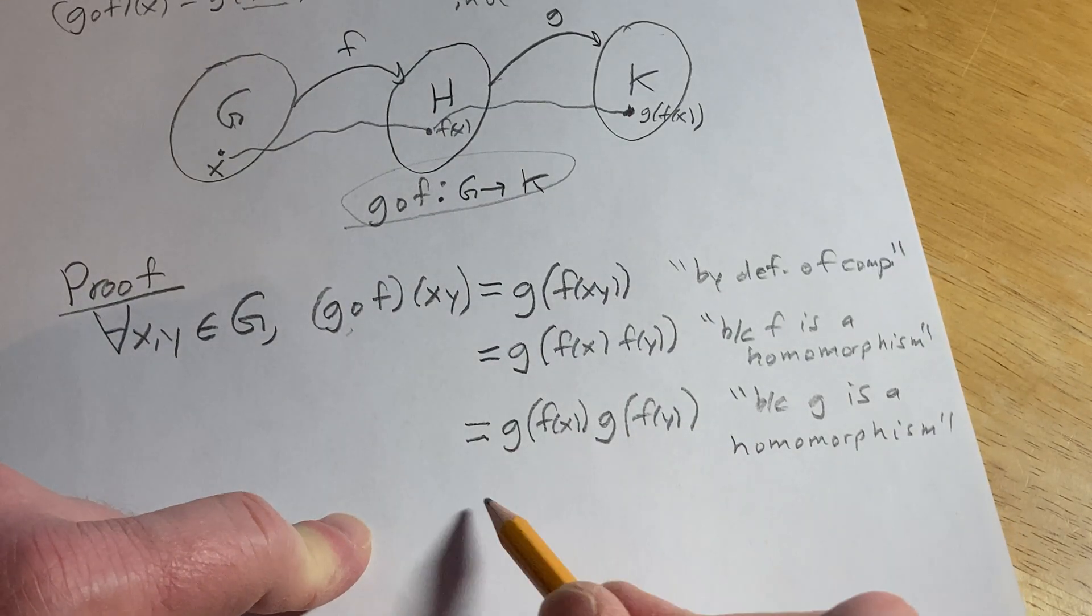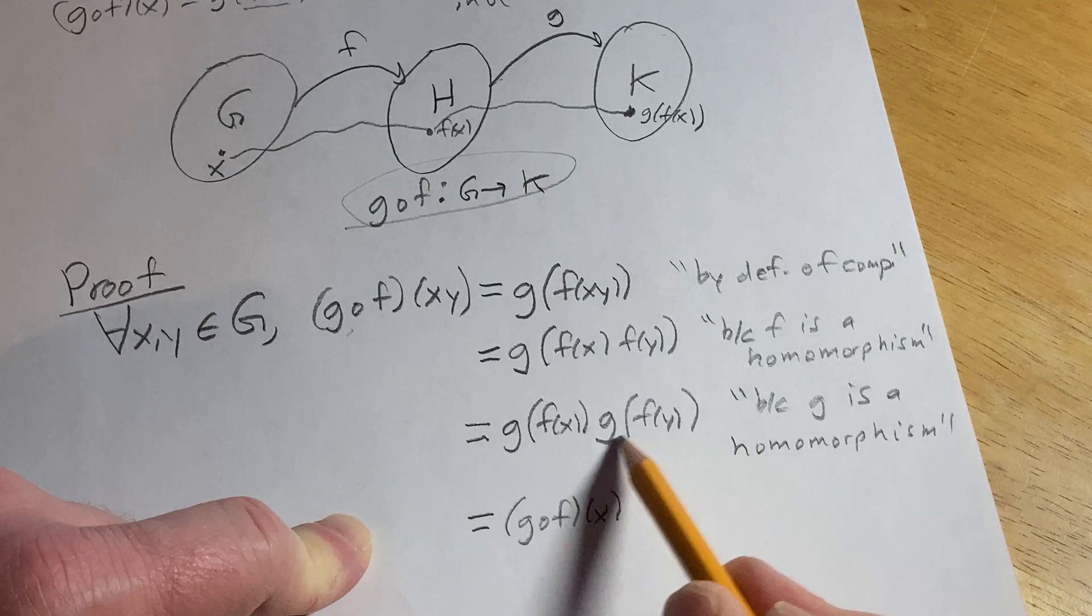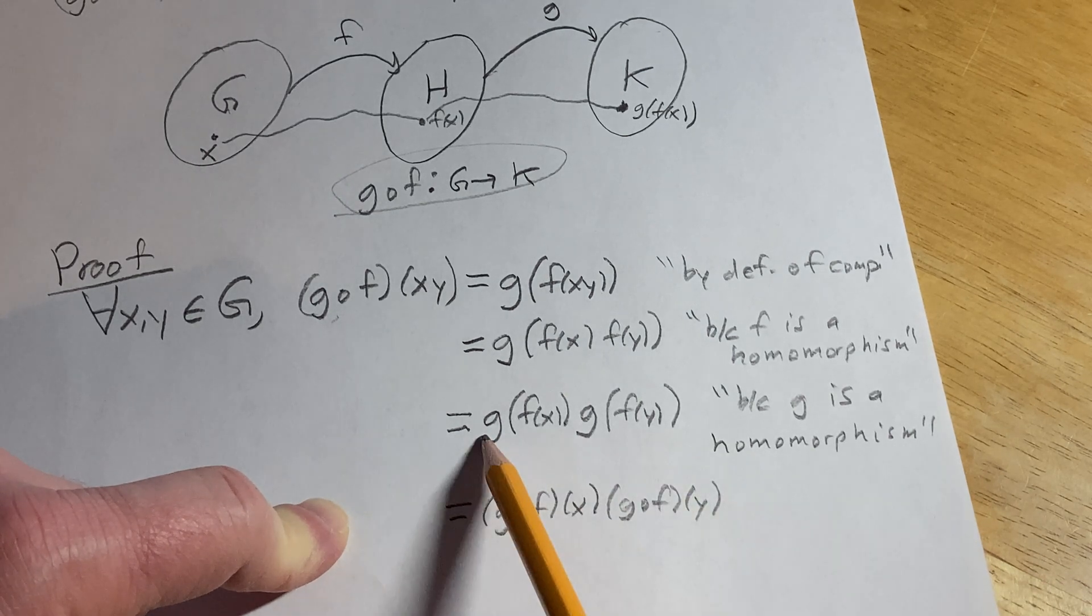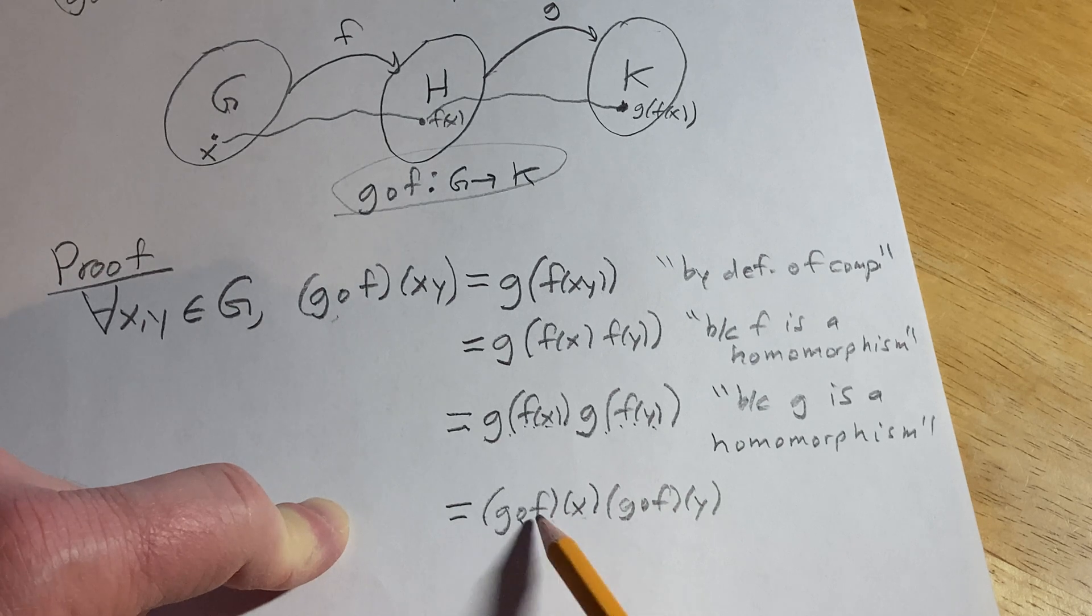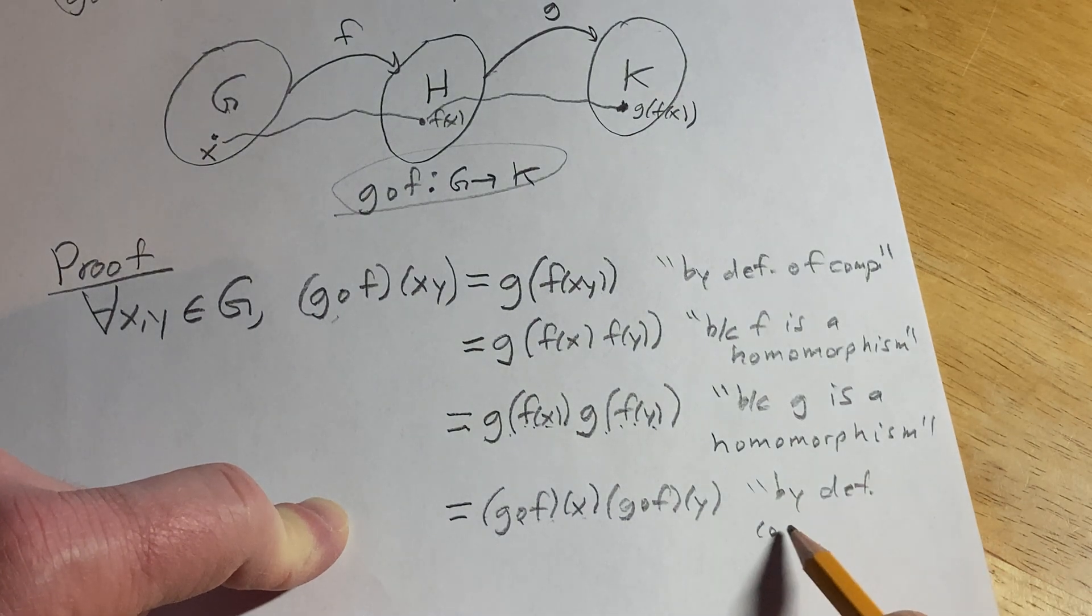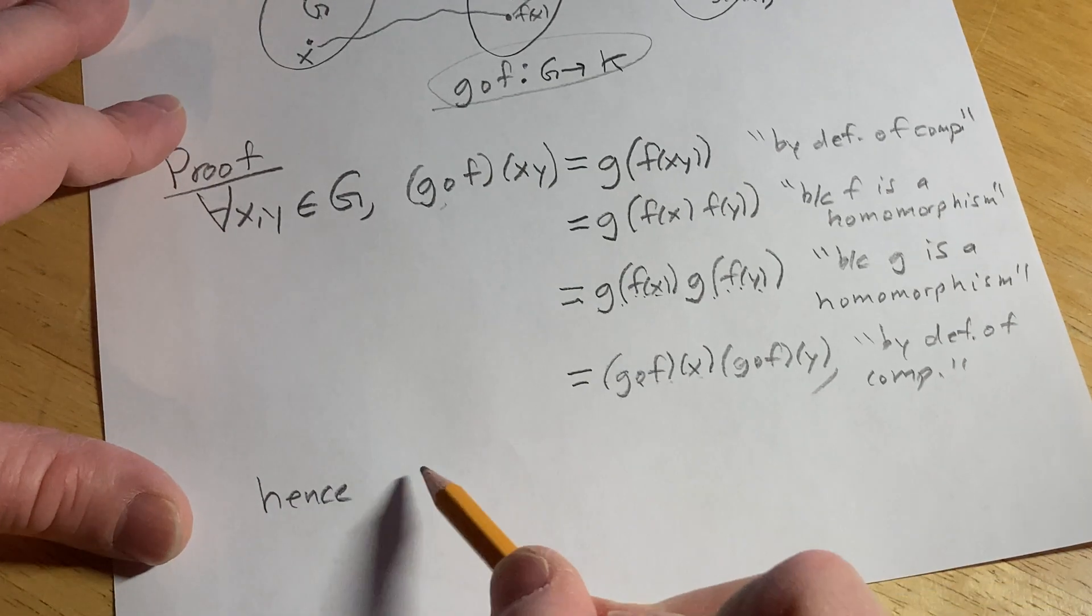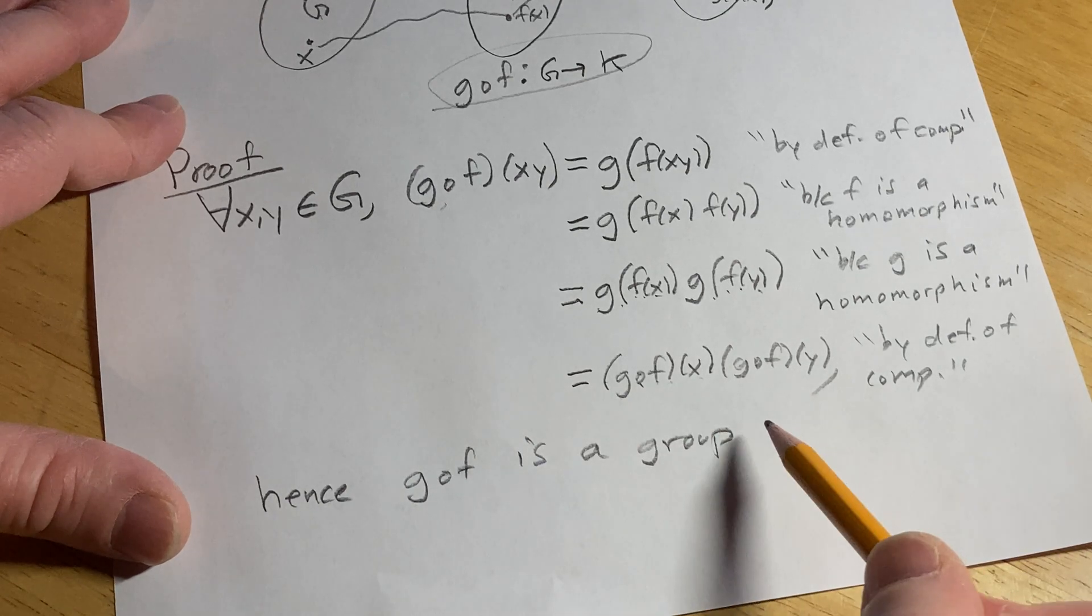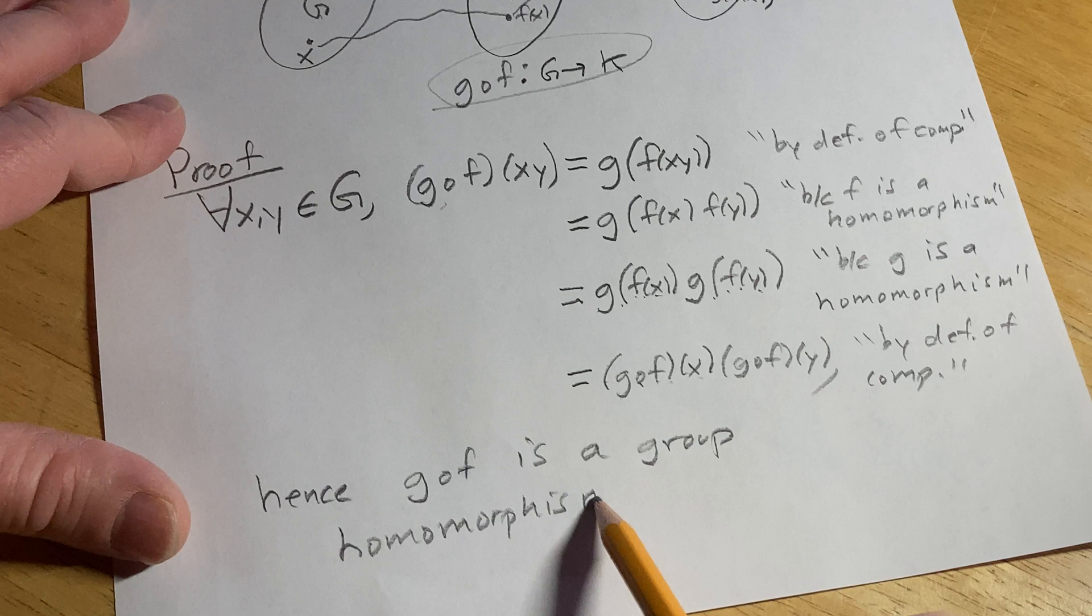Okay, and what is g(f(x))? Well, by definition of composition, that's (g∘f)(x). And g(f(y)) is (g∘f)(y). Notice how I say it differently. g∘f of x. g∘f of y. Here I say g of f of x. It's not g∘f. It's g of. It's ∘. This is by definition of composition. Beautiful. Beautiful. And that completes the proof. Hence, g∘f is a group homomorphism. And that completes the proof.